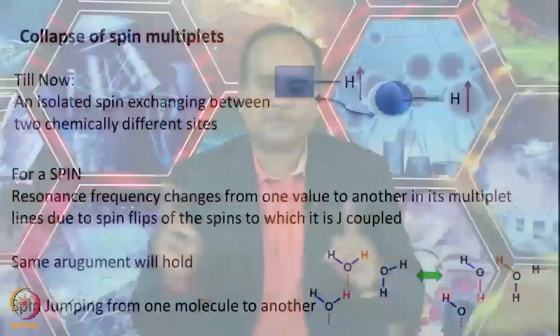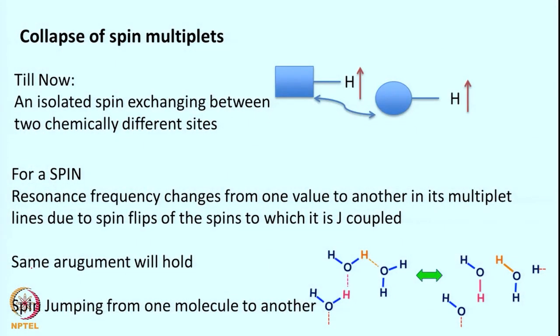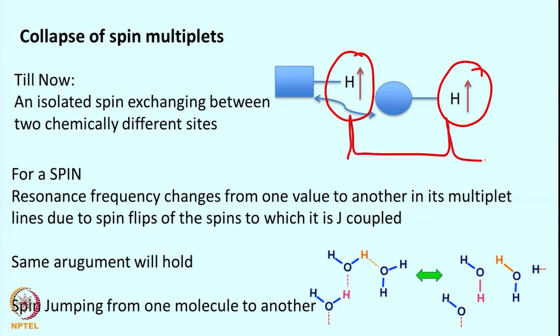Coming to the next topic: if exchange is happening, what happens to the multiplicity pattern? Because of J coupling we see spectra getting split, and we looked at that in detail. So what happens if the protons that cause the splitting are exchanging? The same argument can hold for whatever we just looked at. The flipping rate or exchanging rate of this spin — is it fast, slow, or intermediate? For example, if the OH proton from alcohol is exchanging with water, what happens at fast, slow, or intermediate exchange?